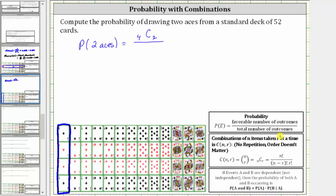And the total number of outcomes is equal to the number of ways of selecting two cards from a deck of 52 cards, which is 52 choose two.